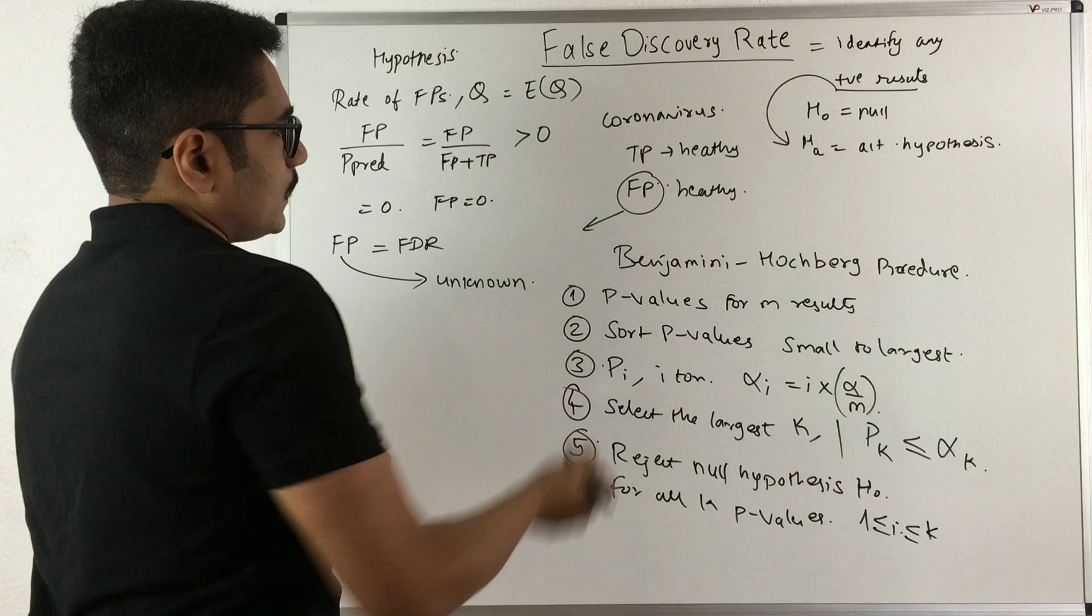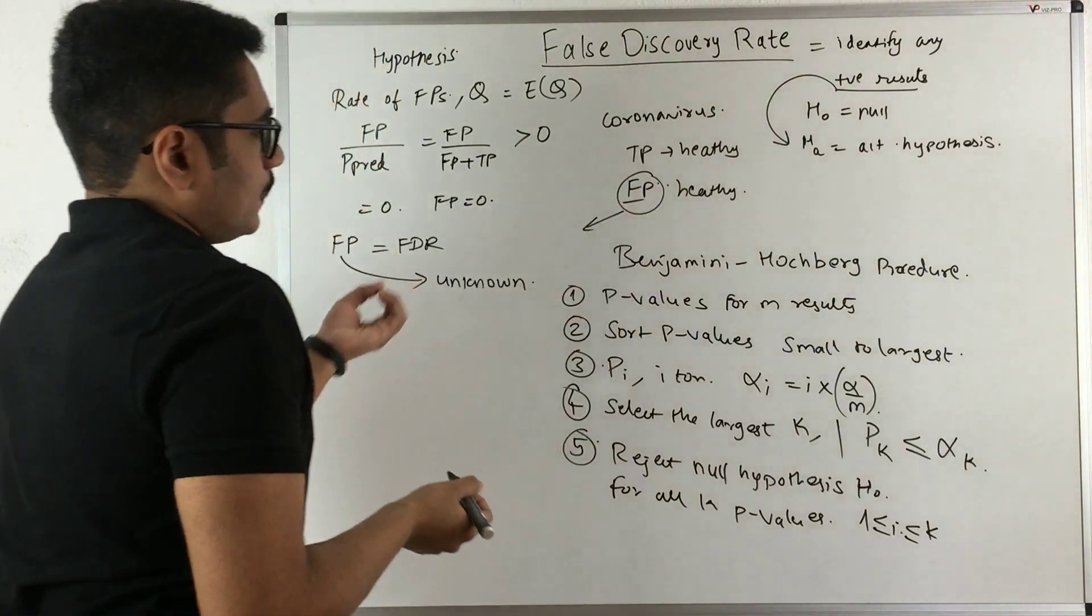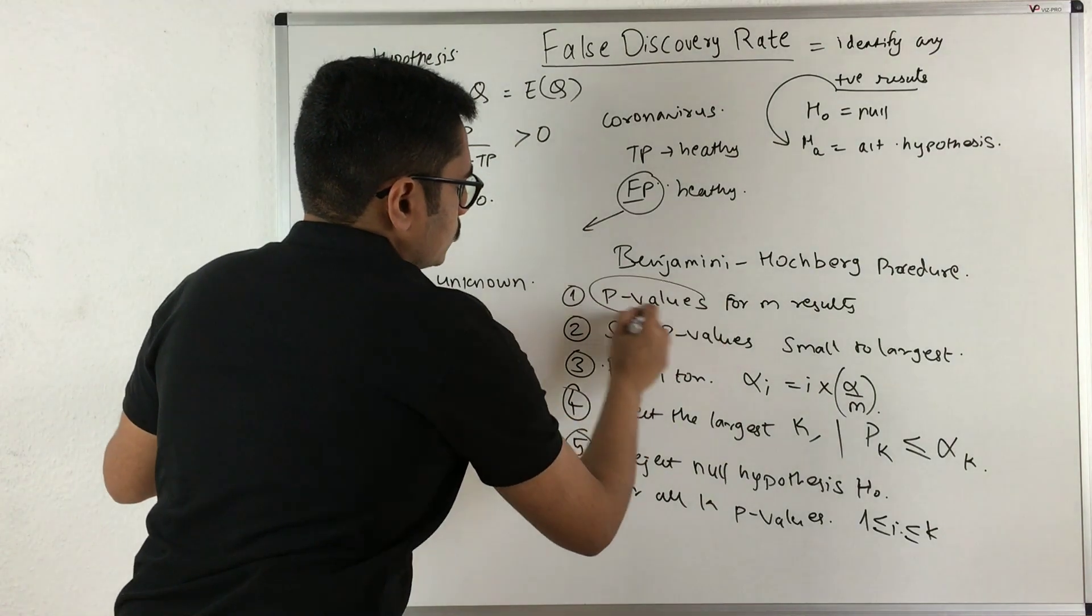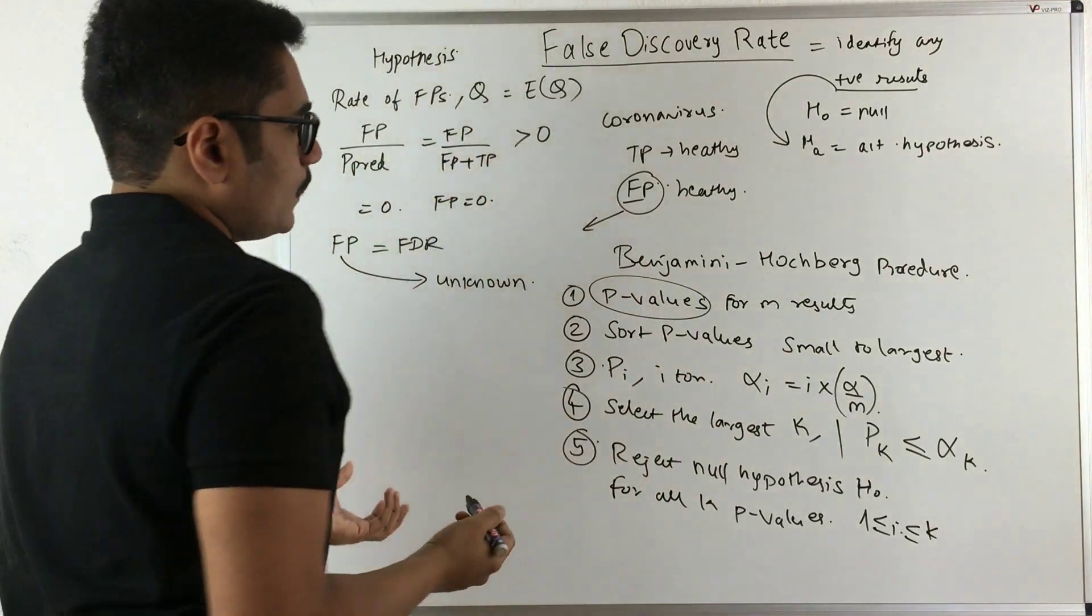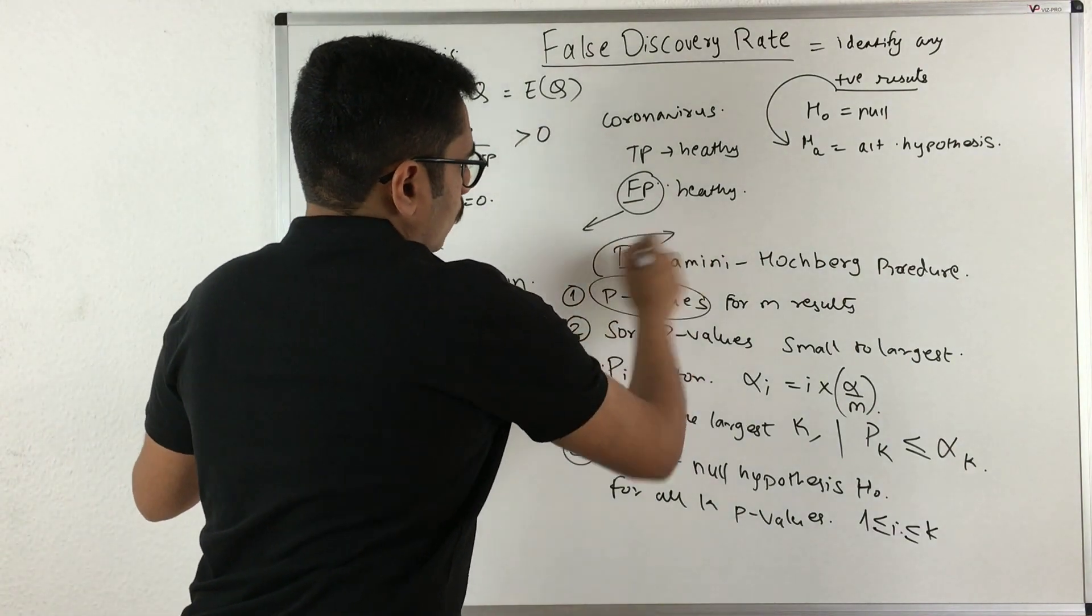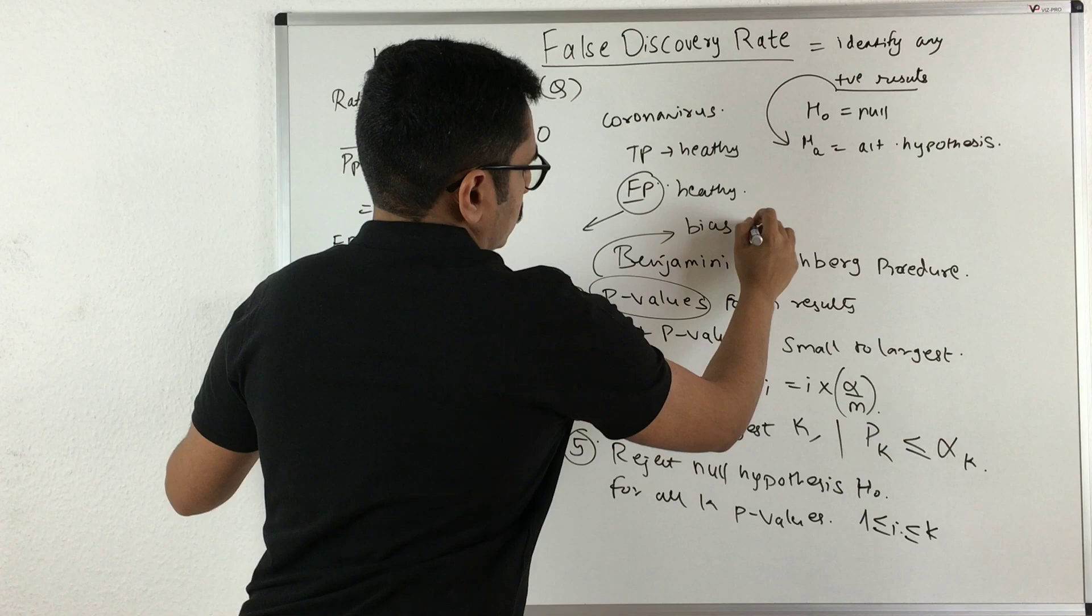You can understand how important it is to identify false positives. We mainly use p-values in hypothesis testing, but p-values are not capable of identifying if there are any biases in the study.